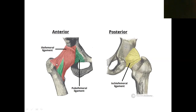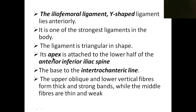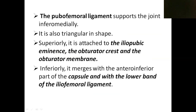The apex of the iliofemoral ligament is attached to the anterior inferior iliac spine — the ilium has two spines anteriorly: anterior superior and anterior inferior. The base of this triangular or Y-shaped ligament is connected to the intertrochanteric line. The greater trochanter and the intertrochanteric line are identified, making the attachment clear.